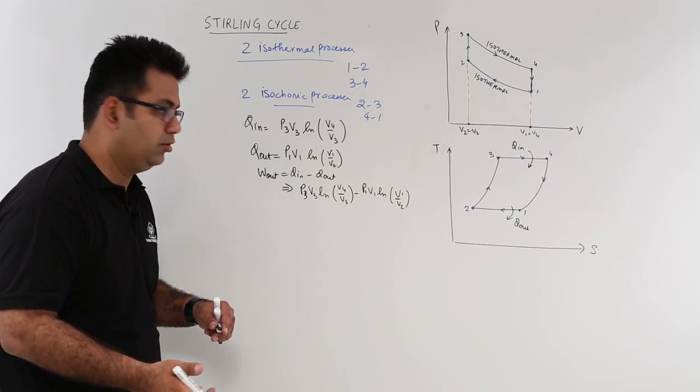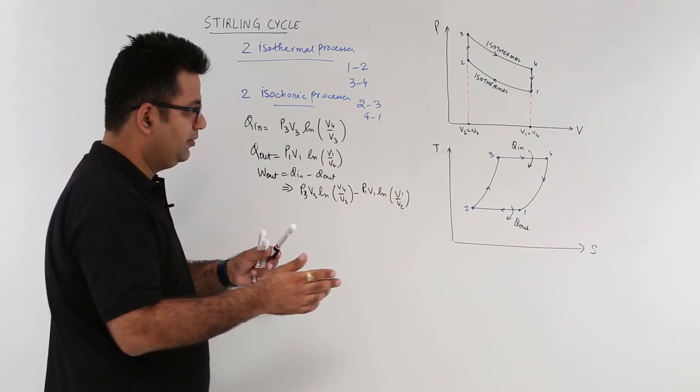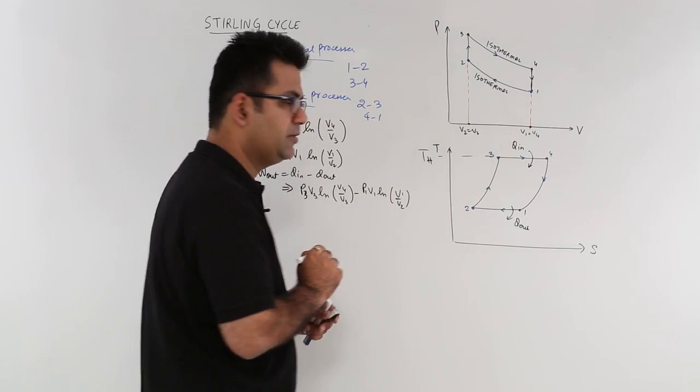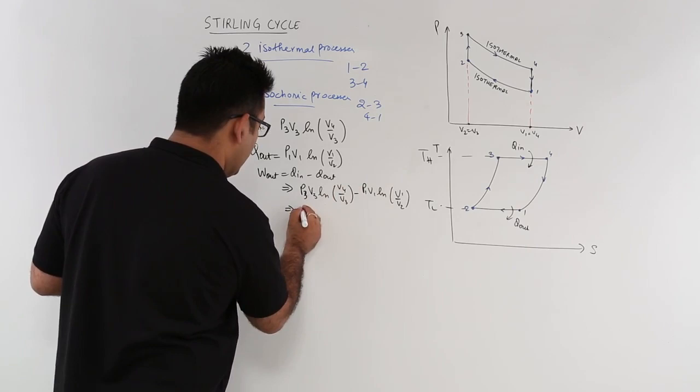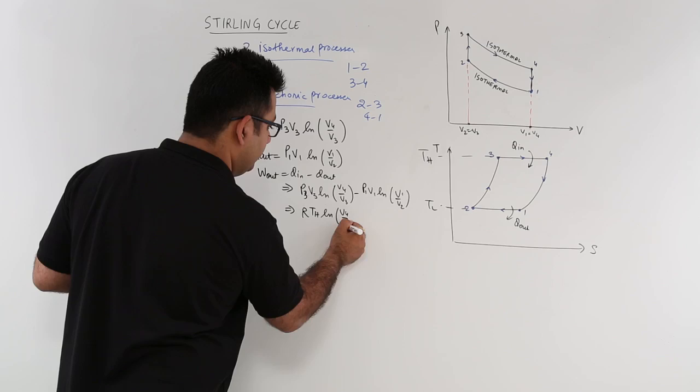So now after this, let us get an expression for the efficiency. But let us first of all get the temperature limit. So this is the higher temperature limit Th, and this would be the lower temperature limit Tl. So P3 V3 would be equal to R into Th natural log V4 by V3.